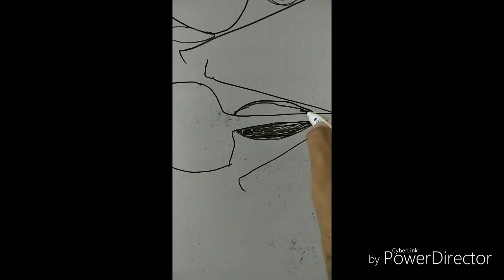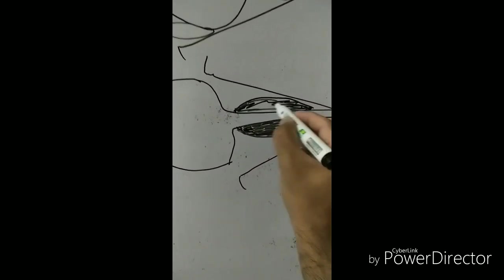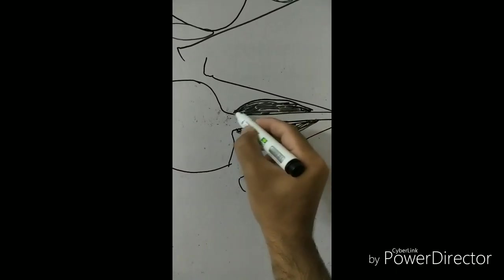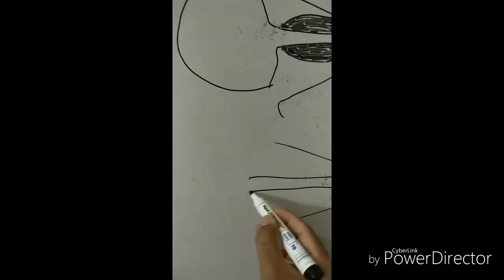After that, optic nerve sheath meningioma. You have to also do MR and magnetic resonance imaging will show tram-track tubular enlargement of the nerve. That will tell you that it's optic nerve sheath meningioma.